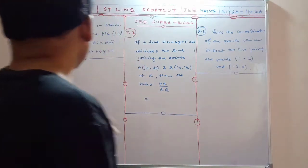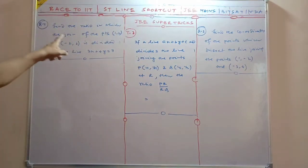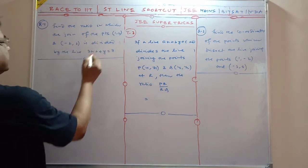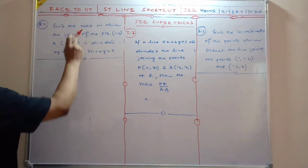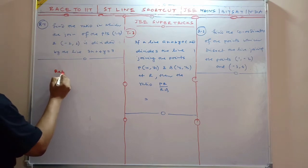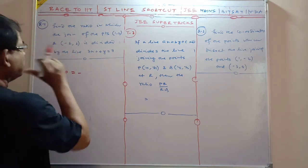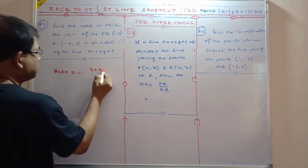So my dear friends, if you know this trick, find the ratio in which the line joining of the points, this and this, is divided by the line. So that ratio is equal to—this is 3 plus 4.